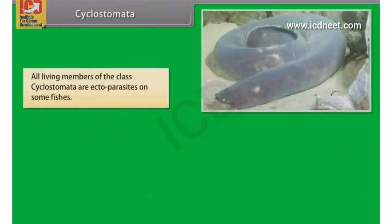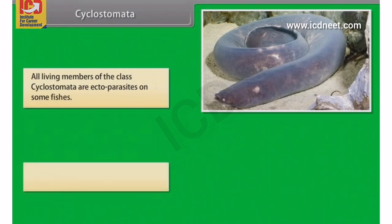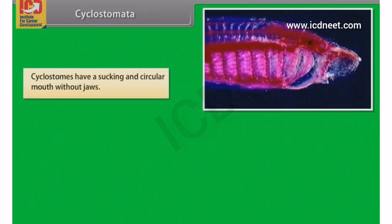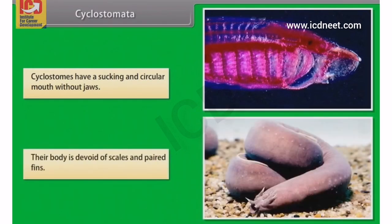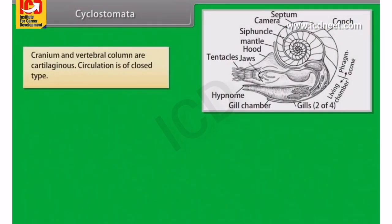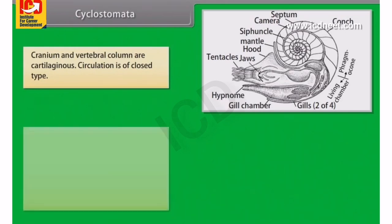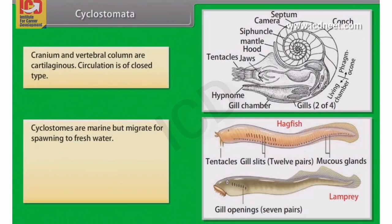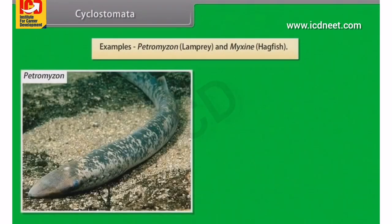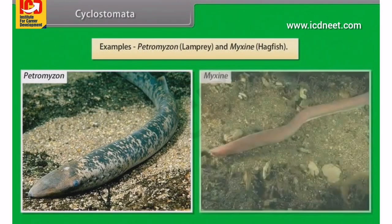Cyclostomata: All living members of the class cyclostomata are ectoparasites on some fishes. They have an elongated body bearing six to fifteen pairs of gill slits for respiration. Cyclostomes have a sucking and circular mouth without jaws. Their body is devoid of scales and paired fins. Cranium and vertebral column are cartilaginous. Circulation is of closed type. Cyclostomes are marine but migrate for spawning to fresh water. After spawning, within a few days, they die. Their larvae, after metamorphosis, return to the ocean. Examples: Petromyzon (Lamprey) and Myxine (Hagfish).